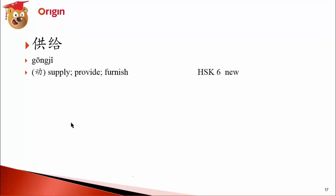供给 (gōng jǐ) — mostly read as jǐ, but here read as jǐ. In modern days many people pronounce it jǐ. I think they should change it to jǐ, but in the dictionary it's 供给 (gōng jǐ).